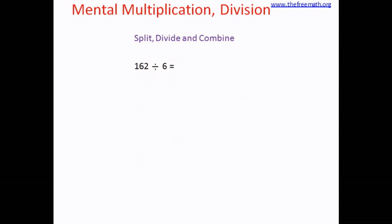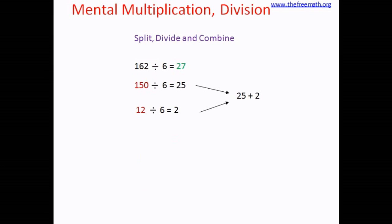So instead of splitting as 160 and 2, let's split 162 as 150 and 12. Both 150 and 12 are divisible by 6. 25 sixes are 150 and 2 sixes are 12, so our answers are 25 and 2. Combining: 25 plus 2 equals 27. So the answer is 27.